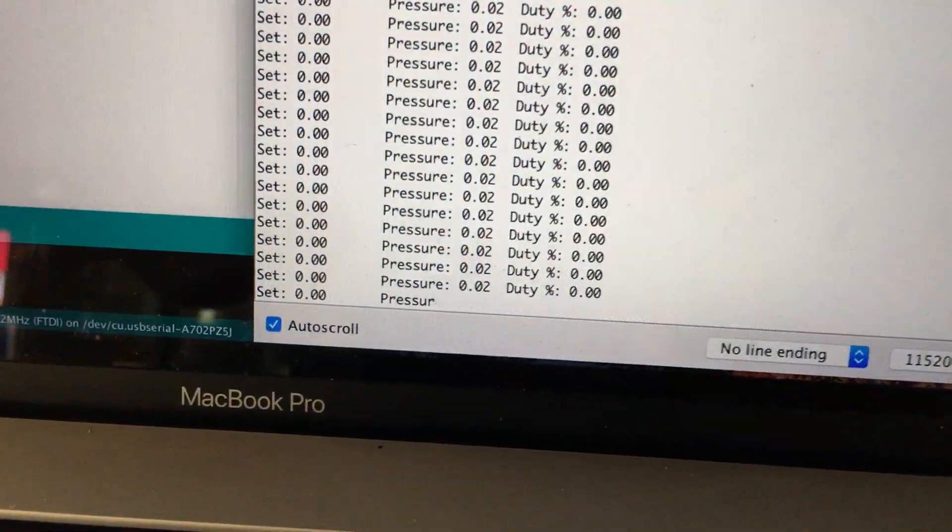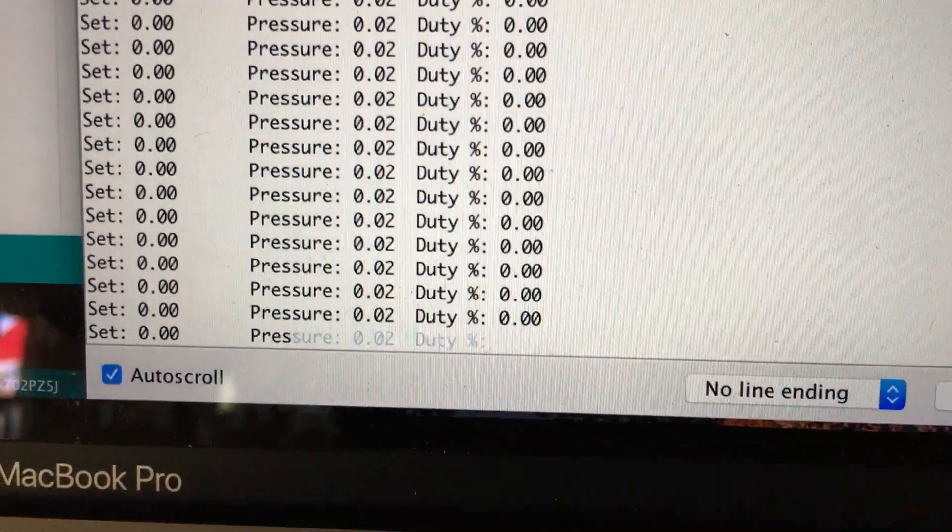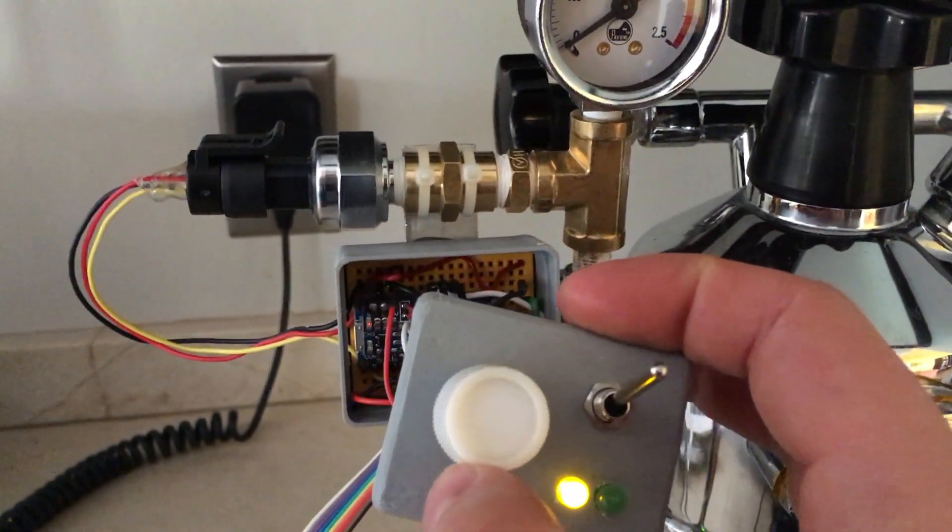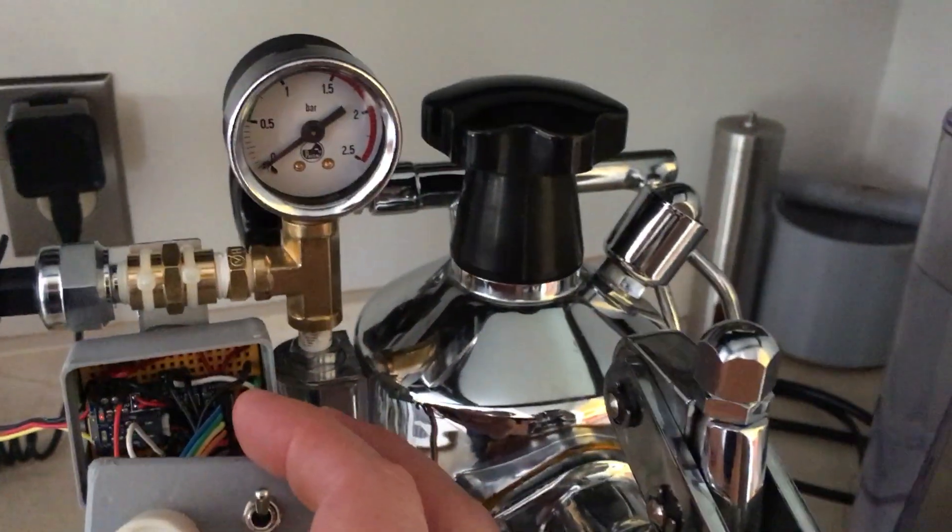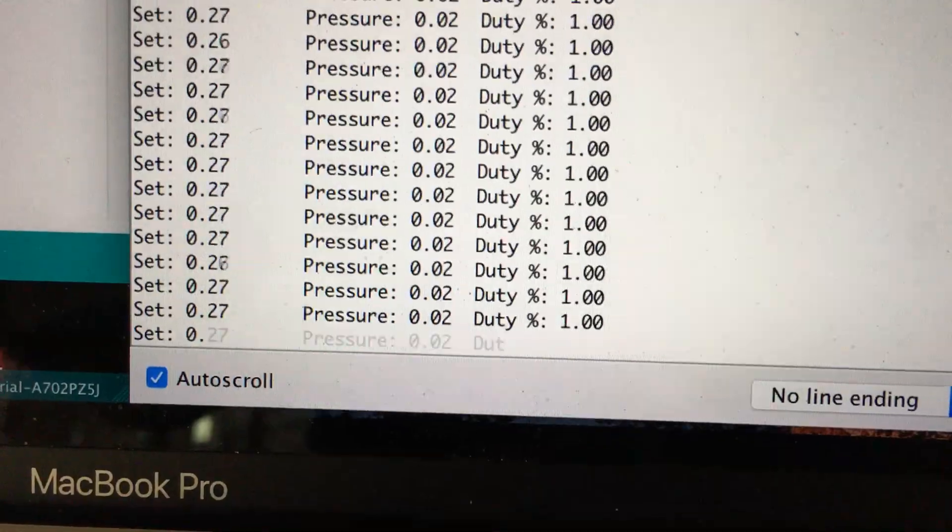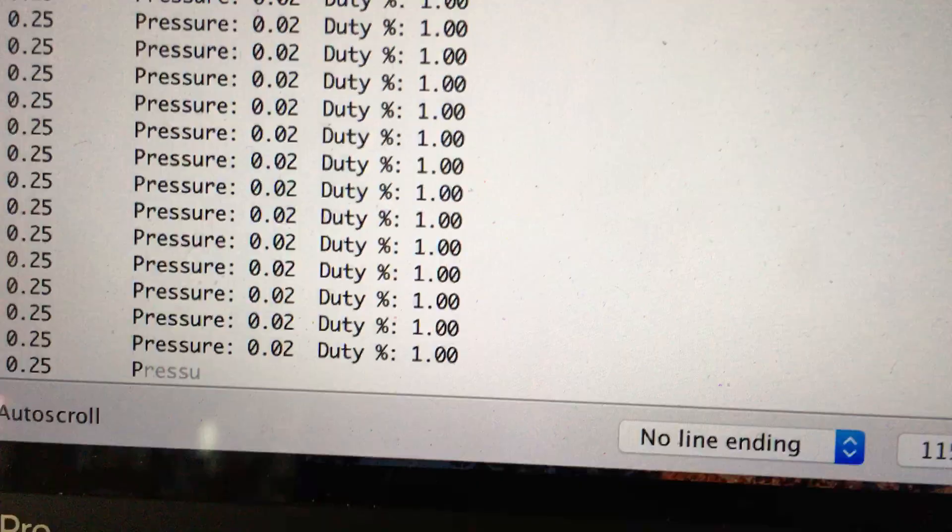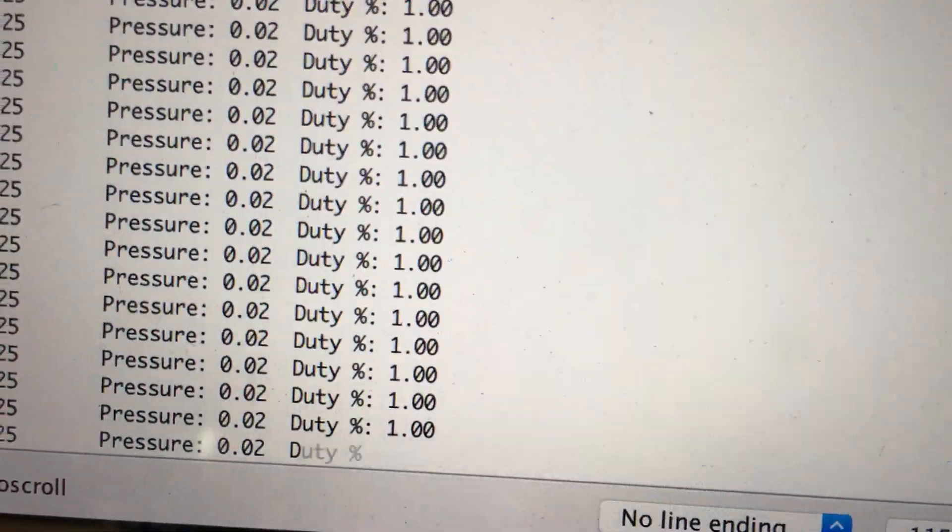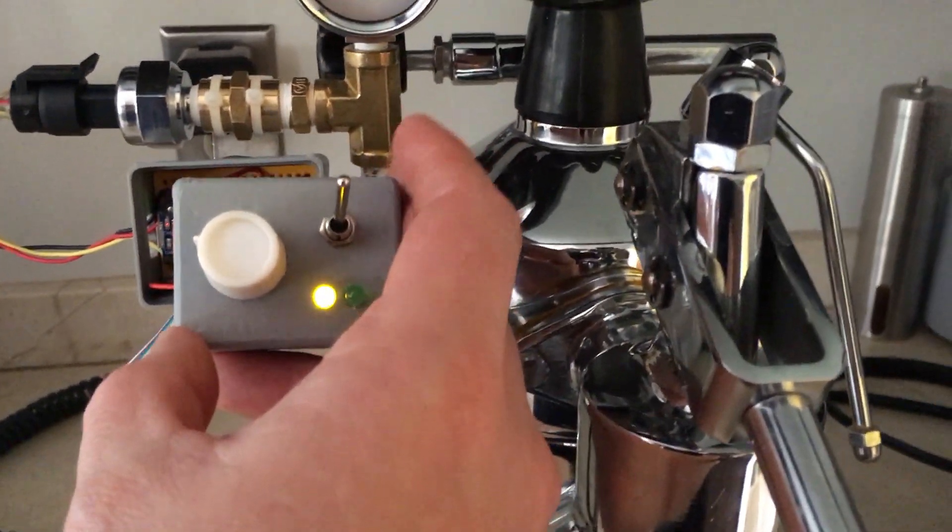So I have the potentiometer wound all the way to the left. So right now the set point is zero and the pressure is about zero. So the duty cycle of the relay is off. And you can see here that the pressure is at zero. So I'm going to put it up to about 0.25 atmospheres. You can hear the machine comes on instantly. See over here, the set point is now 0.25, the pressure is 0.02, and the relay is on 100%. So essentially right now it's just full on.